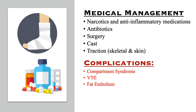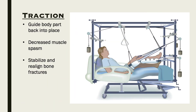A fat embolism can also travel to the lungs, causing the same pulmonary embolism. Traction helps guide body parts back into place, holding them steady to decrease muscle spasms while providing stabilization and realignment of fractured bones.